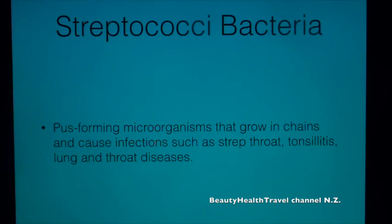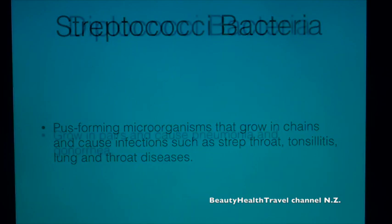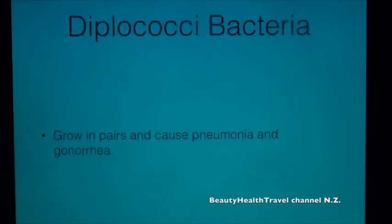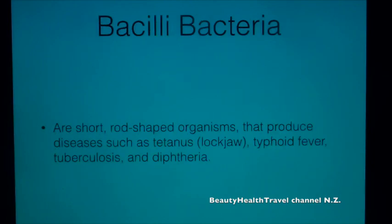Streptococci bacteria are pus-forming organisms that grow in chains and cause infections such as strep throat, tonsillitis, and lung and throat diseases. Diplococci bacteria grow in pairs and cause pneumonia and gonorrhea.